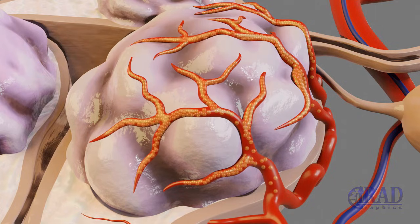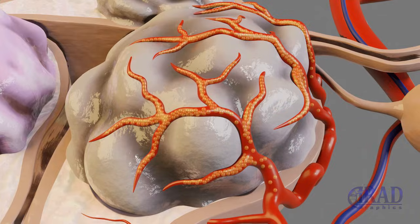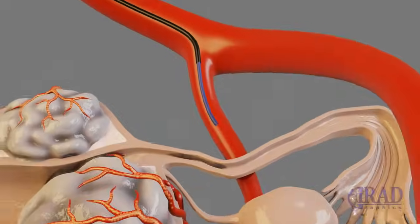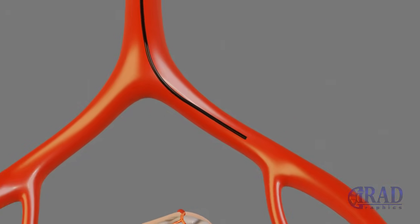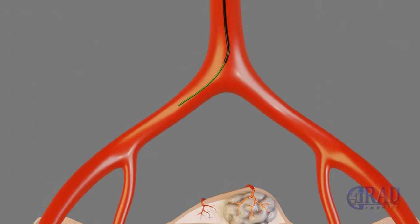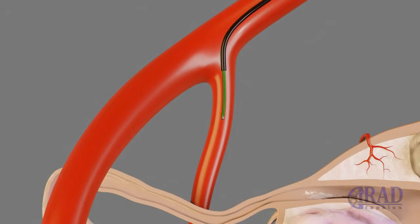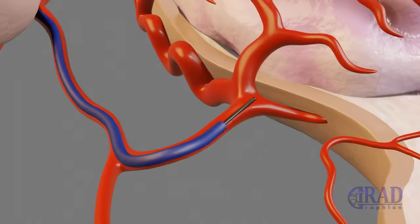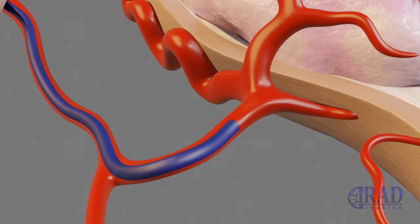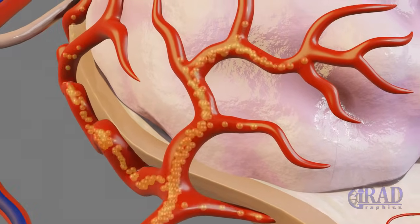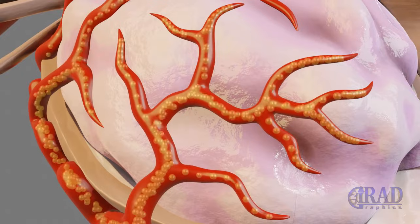The microcatheter is pulled back into the base catheter, which is also pulled back into the aorta and then advanced into the contralateral internal iliac artery. The unwanted collaterals are bypassed in a similar fashion, and similar particles are injected into the contralateral uterine artery until slow blood flow is noted.